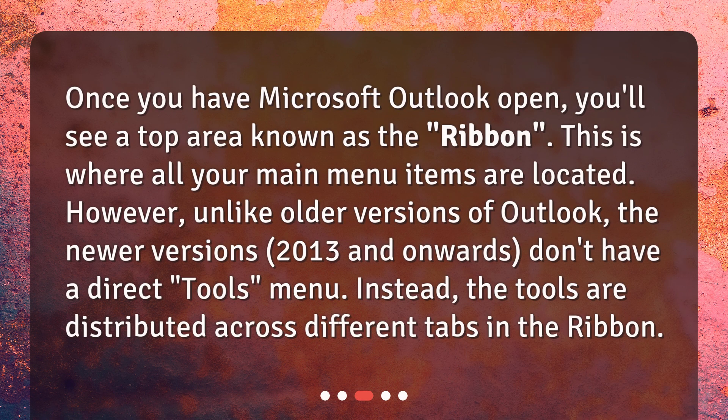Once you have Microsoft Outlook open, you'll see a top area known as the Ribbon. This is where all your main menu items are located. However, unlike older versions of Outlook, the newer versions, 2013 and onwards, don't have a direct Tools menu. Instead, the tools are distributed across different tabs in the ribbon.